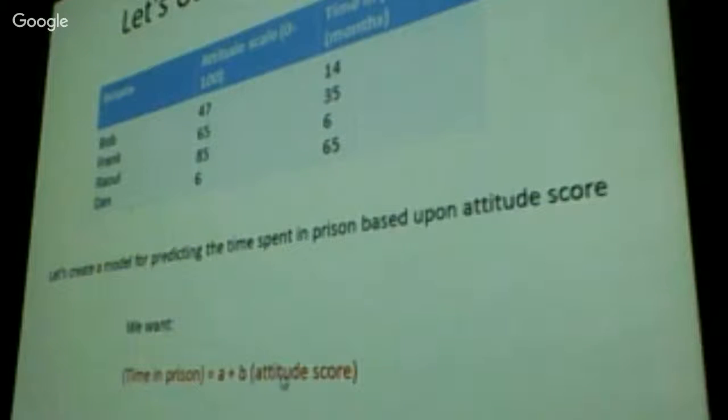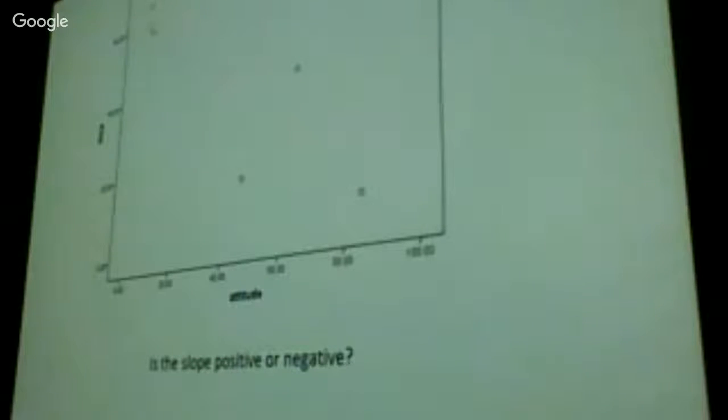So what we want is time in prison predicted by an intercept plus a slope multiplied by an attitude score. I'm going to predict time in prison based upon how well you score on your attitude test. Think about this. This would be amazing if we could do this. That is our plot. We know it looked like a straight line, sort of. So we're going to get a straight line, it looks like this.